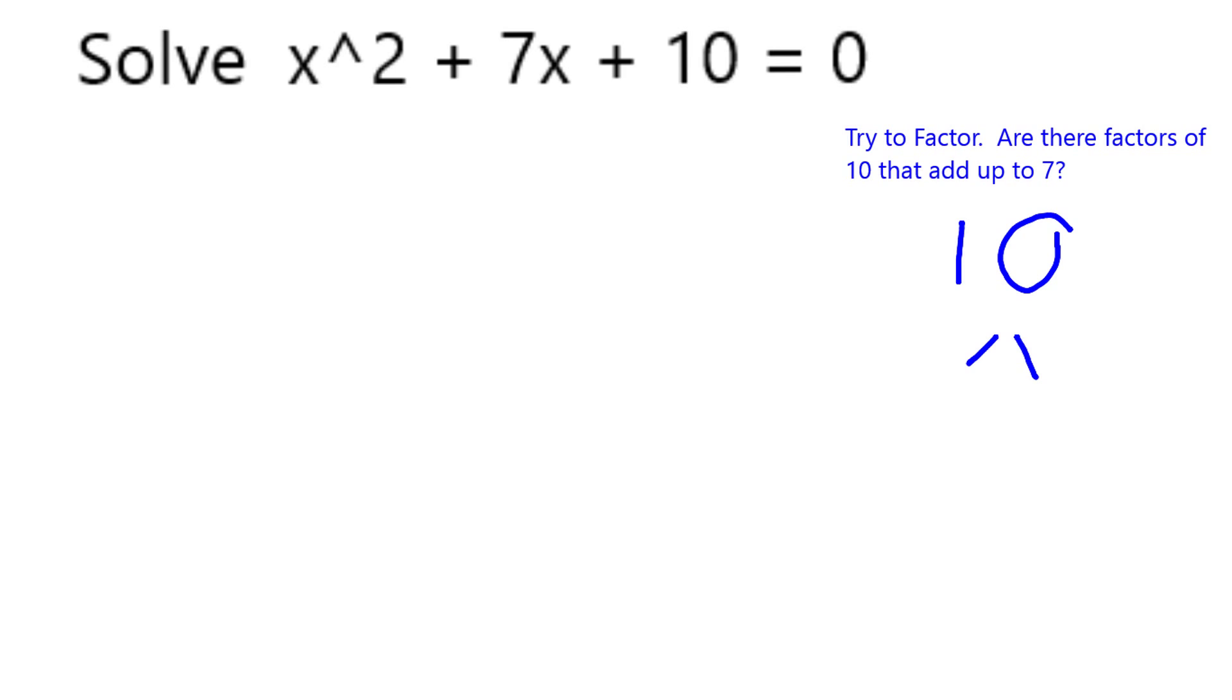I'm looking for factors of 10 which add up to 7. So 10 can either be written as 10 times 1 or 5 times 2, which conveniently does add up to 7.